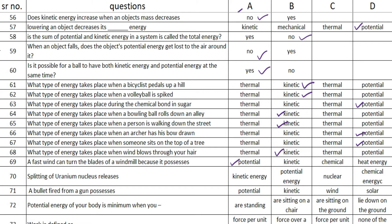The next one is: splitting of uranium nuclear release — the answer is option C — nuclear. A bullet fired from a gun possesses